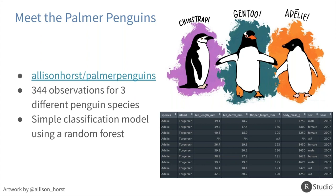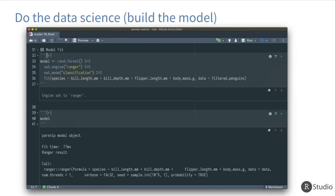What we want to do is say we've been handed this data, and we're going to do the data science — in some cases that means build the model. We'll take these 344 observations. This is not a model-building webinar, so this is not about building the best model possible. This is just a relatable example that's easy to understand.